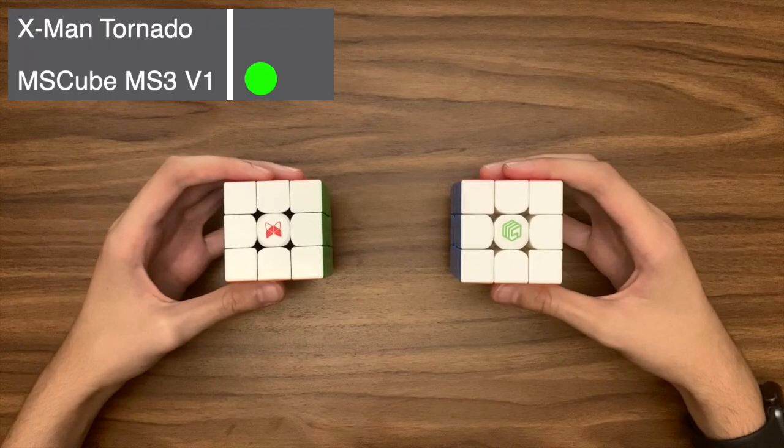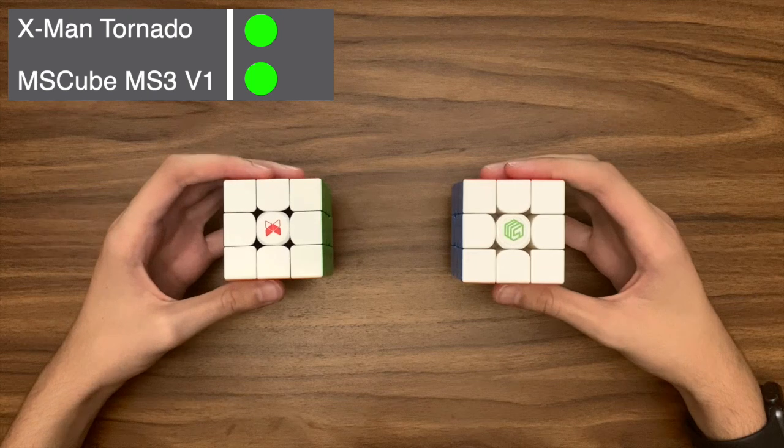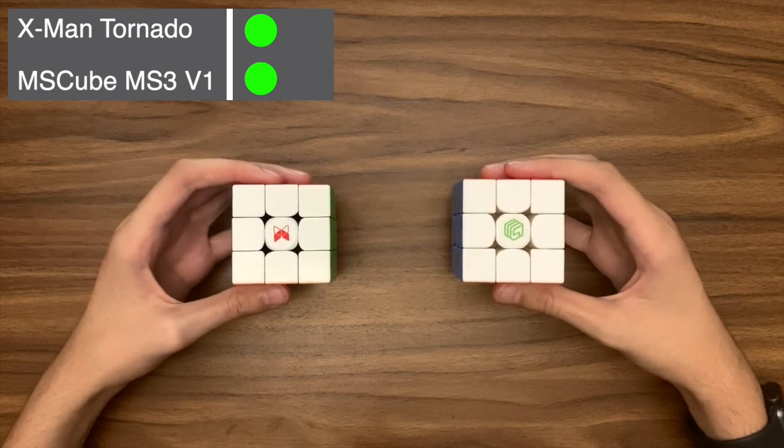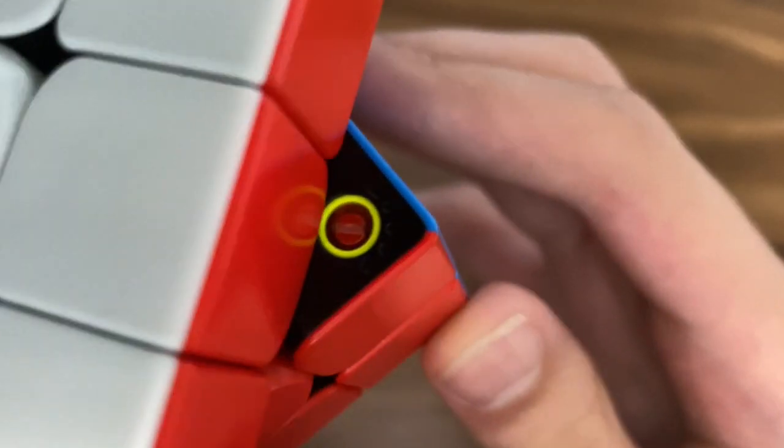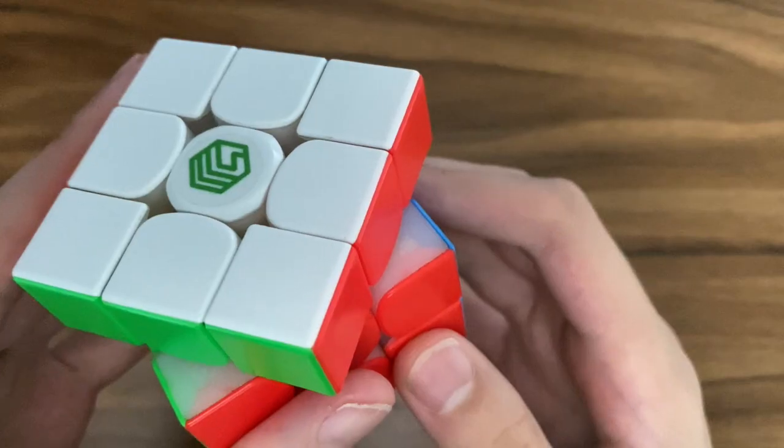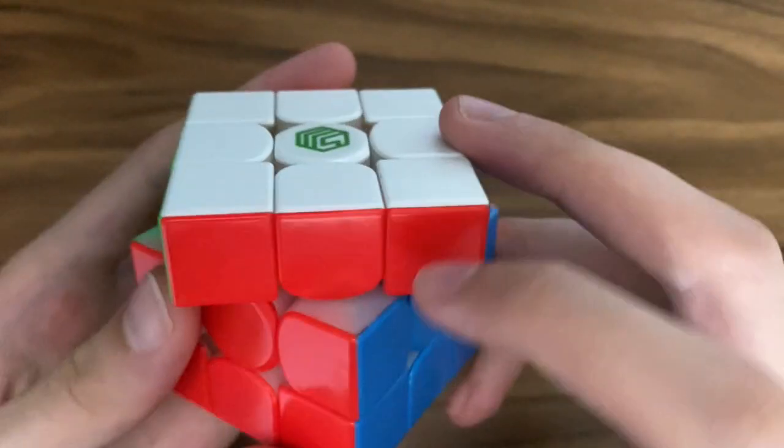Customization: I think that this is a clear win for the Tornado considering there are 125 different ways that you can customize this cube, including five magnet strengths. This is so much better than the MS3, which doesn't have any available customization for the magnets.